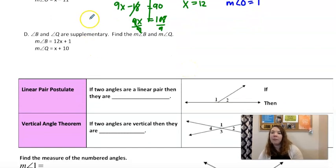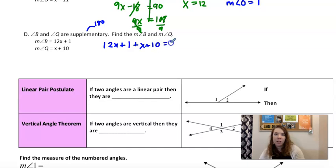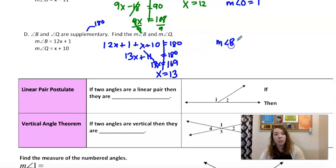Example D here is very similar, but they said supplementary. So we have to add to 180. So we'll add them together. Set it equal to 180 and solve. So we have 13X plus 11. Subtract 11. Is 169. Divide by 13. You'll get 13. And then you have to plug it back in because they asked for the measures. You want to make sure you're answering the question. So 12 times 13 plus 1 is 157. And then 13 plus 10 is 23. And these add to 180.